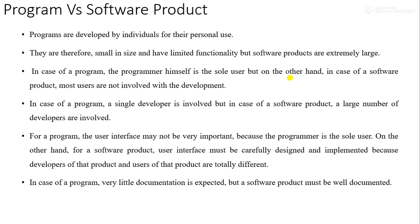Now we are going to learn the major difference between a program and a software product. Programs are developed by individual users for their personal use. Examples of programs include adding two numbers, finding a factorial, or finding the smallest number in an array — these are all very small in size. Whereas software products are very large in size. Programs have a limited number of functionalities, but software products have a large number of functionalities. In case of a program, the programmer himself uses that particular program, but in the case of a software product, most users are not involved with the development.